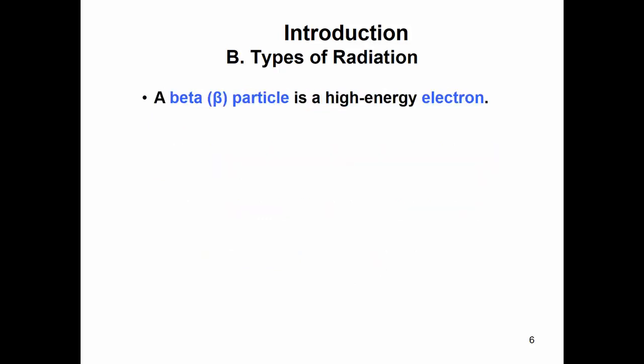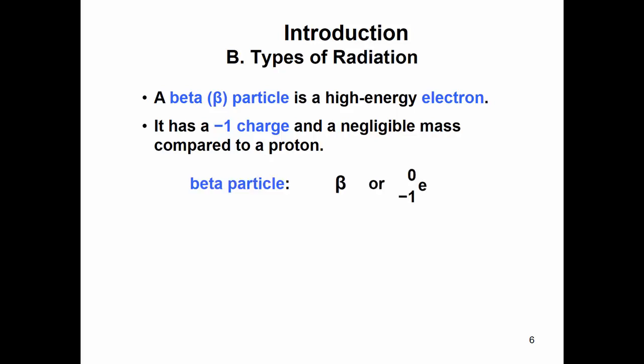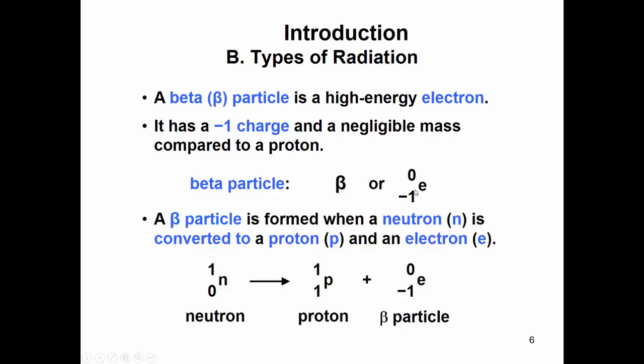A beta particle is a high-energy electron. It looks like an electron. It has a negative one charge - we know electrons have a negative one charge - and it has a negligible mass just like an electron. So if we look at its symbol, there's our beta, and then it can also be written like this: zero mass, negative one charge, and e for electron. These can be formed - we'll look at this more later - but it can be formed when a neutron converts to a proton plus an electron.